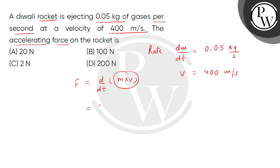This will be m × dv/dt + v × dm/dt. Now because the velocity of the rocket is constant, the first term, which is the derivative of a constant, will be 0.